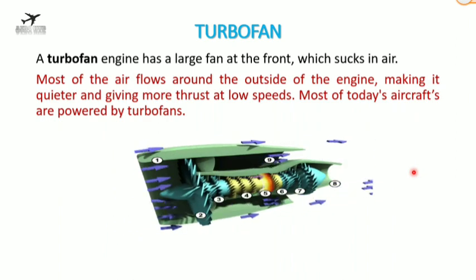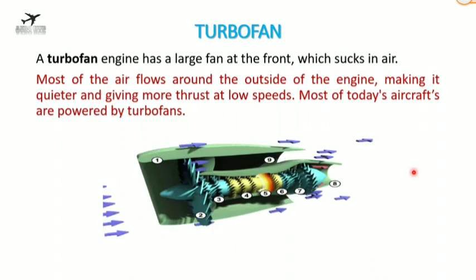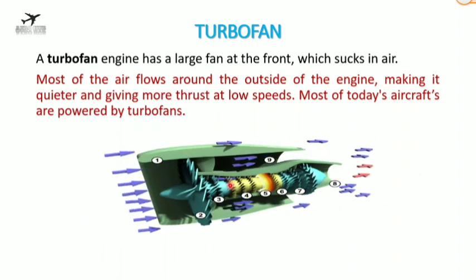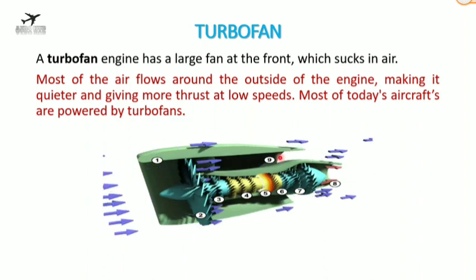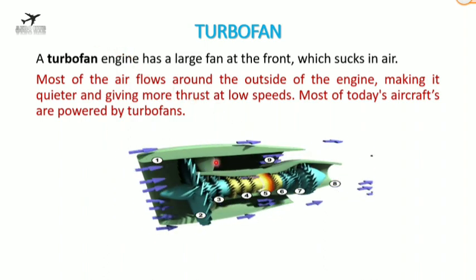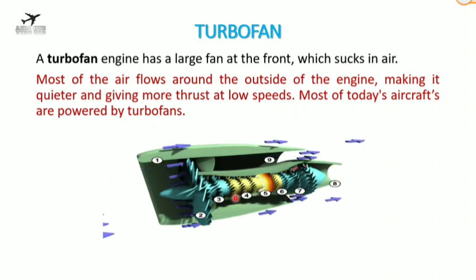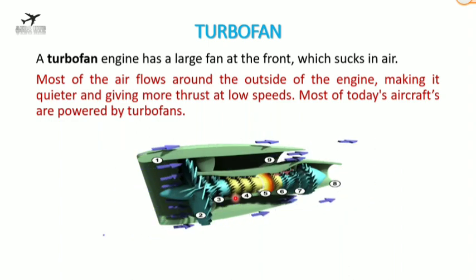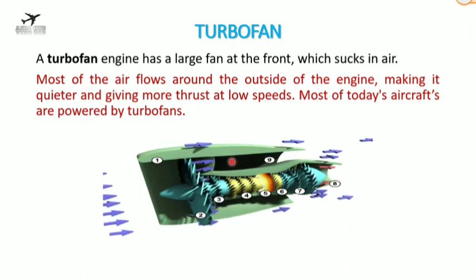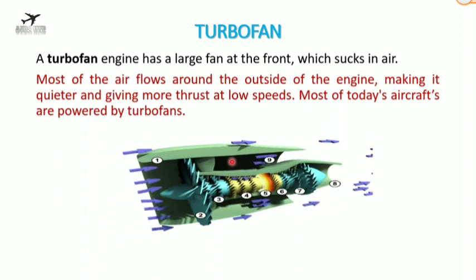A turbofan engine has a large fan at the front which sucks in air. It is essentially a jet engine with a fan in the frontal part and a bypass duct. Most of the air flows around the outside — the bypass — rather than through the core engine. This makes it quieter and gives more thrust at low speeds. The bypass ratio is the ratio of airflow outside the engine to airflow through the core, and a higher bypass ratio is preferred.